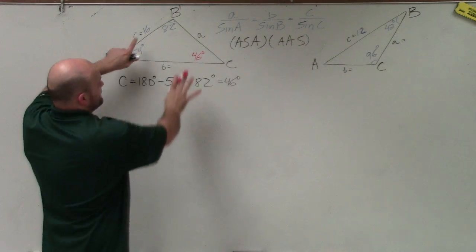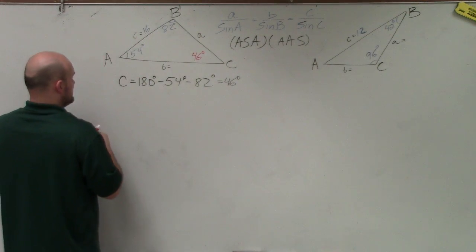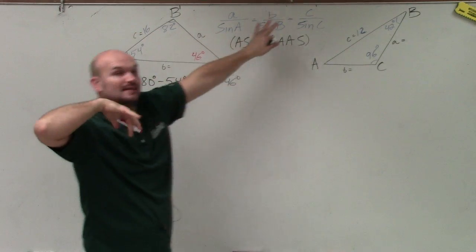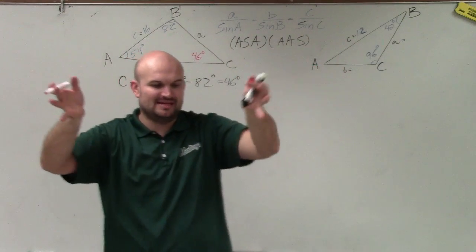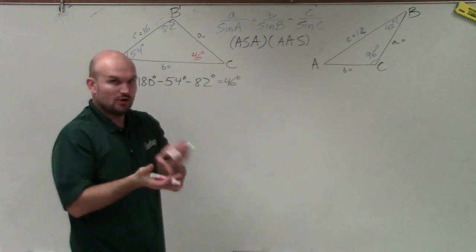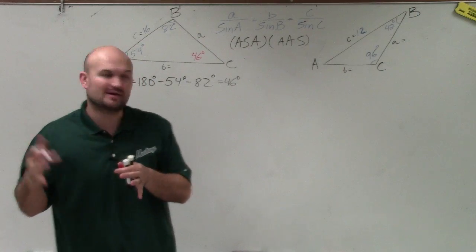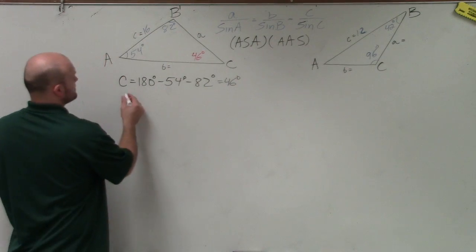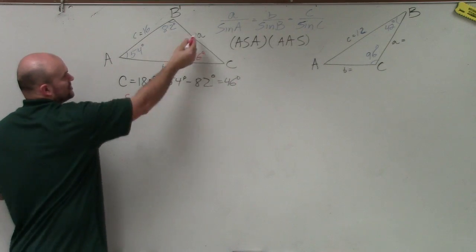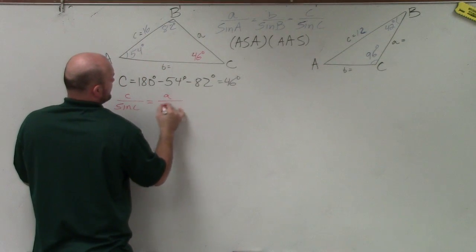Now I have the ratio of 46 degrees and side C of 16, so I can use a proportion from the law of sines. There are three proportions, meaning each ratio is equal to the next. But to solve, we only need one ratio equal to another. I have the ratio C over sine of C, and I just need to set that equal to either A or B. Let's do A over sine of A.